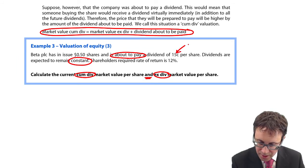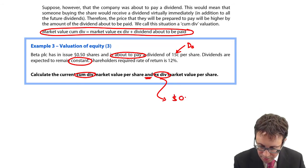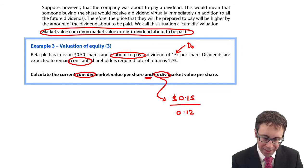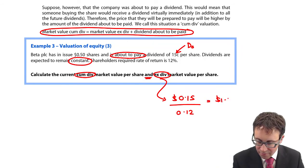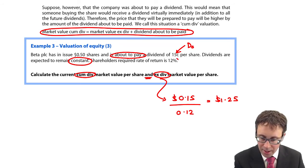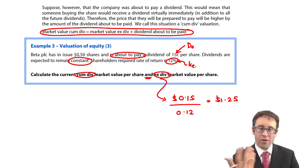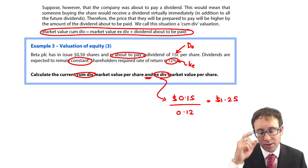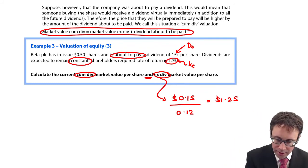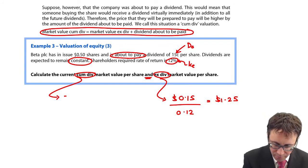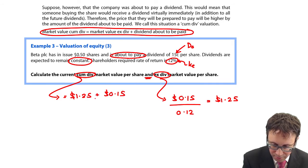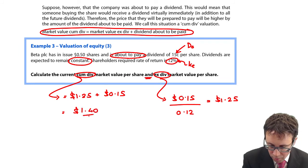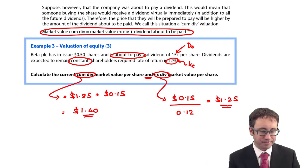To work out the XDIV, you take the dividend of 0.15 and divide it by the return of 0.12 — it's the same scenario as the previous example, so the XDIV value is $1.25. The only thing that's changed is that we are about to pay a dividend. To work out the CUMDIV, take the XDIV of $1.25 and add on the dividend about to be paid, which gives $1.40.